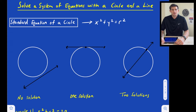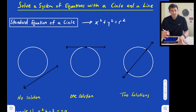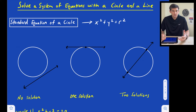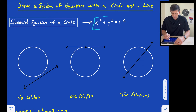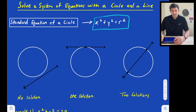In this video we're going to talk about how to solve a system of equations when we have a circle and a line. The first thing we need to remember is the standard equation of a circle that we learned in geometry, and that would be x squared plus y squared is equal to the radius squared, or r squared.